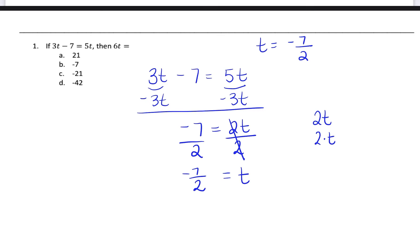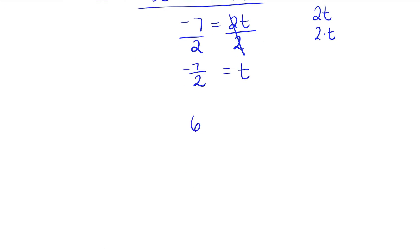But we're not done yet. We now have to take this information and put it into this equation because we want to find out what 6T is. So we're going to 6T. We know that T is equal to negative 7 over 2. So we're going to do 6 times negative 7 over 2. So the first thing I'm going to do is I'm going to write 6 as a fraction. 6 over 1 times negative 7 over 2.